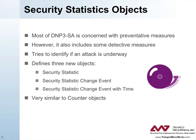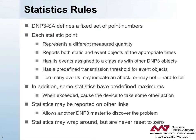The three new security objects are: security statistic, security statistic change event, and security statistic change event with time. These objects are very similar to counter objects. DNP3 secure authentication defines a fixed set of point numbers for statistics. Each statistic point represents a different measured quantity, reports both static and event objects at the appropriate times, and has its events assigned to a class, just like other DNP3 objects.